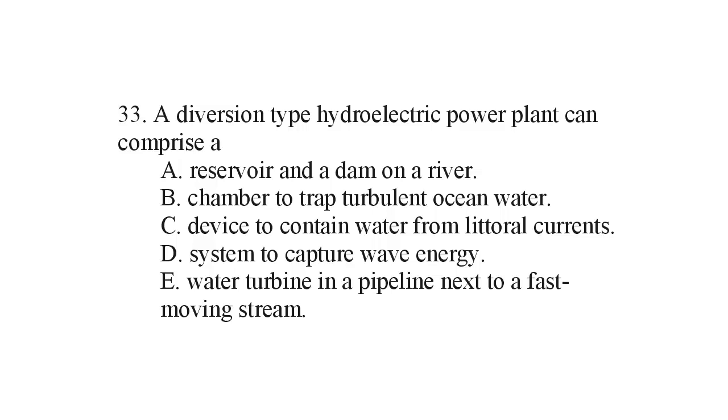The question asks us what a diversion type hydroelectric power plant consists of. The key word here is diversion. That means we divert the flow of water from something to something else. The correct answer to this question is E, a water turbine and a pipeline next to a fast-moving stream.